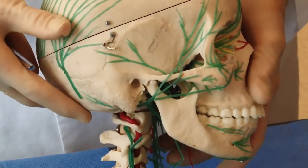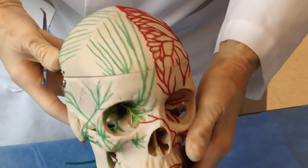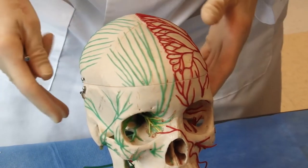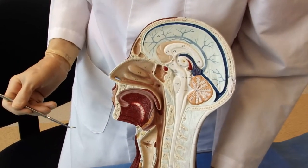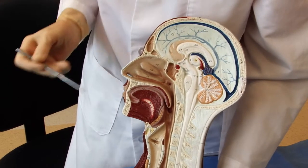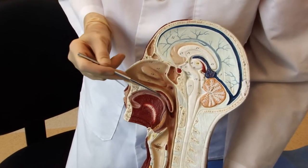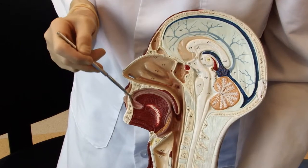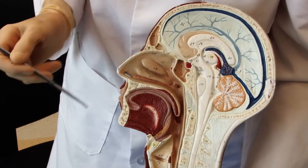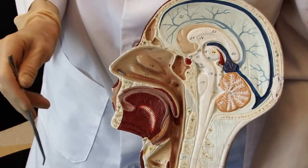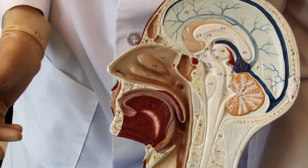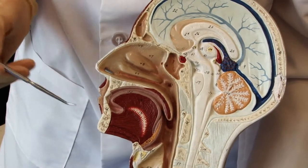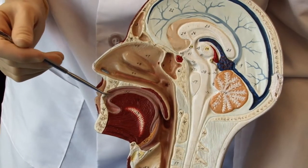So now let's look at some of the internal structures that are also innervated by the trigeminal nerve. Here's a hemisection of the head, and I just want to remind you that the anterior two-thirds of the surface of the tongue, and also the mucosa of your cheeks are innervated by the trigeminal. So if you bite your cheek or burn your tongue, that information is conveyed by the trigeminal nerve.